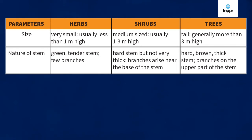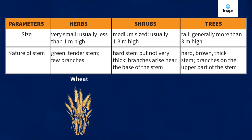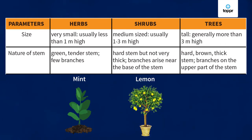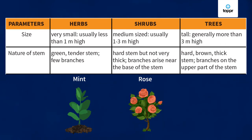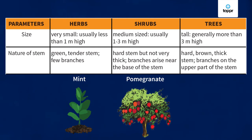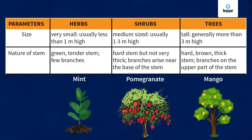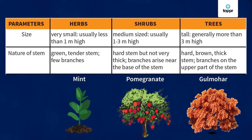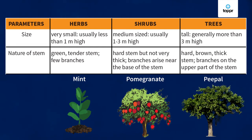Some common examples of herbs are grass, tomato, wheat, and mint. Shrubs can be hibiscus, lemon, rose, or pomegranate. Trees include mango, neem, gulmohar, and peepal. You can also figure out in your surroundings which plants you can categorize under herbs, shrubs, and trees.